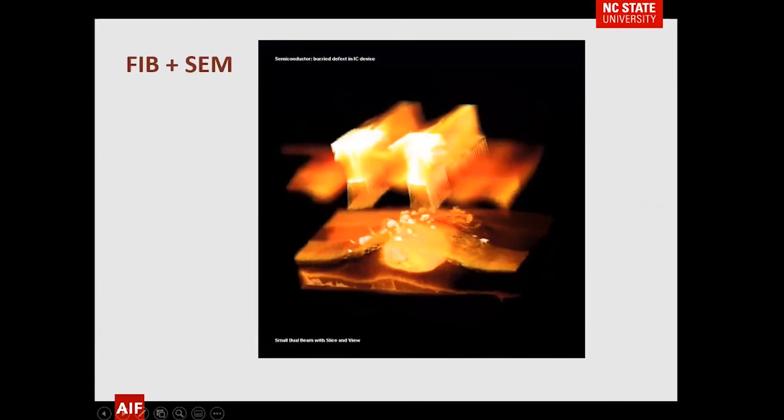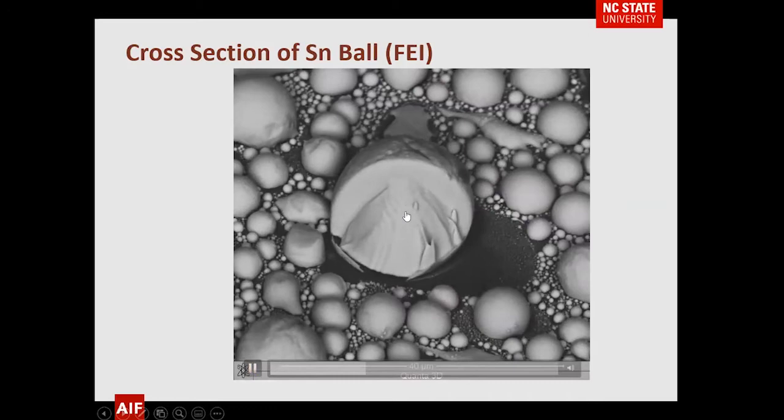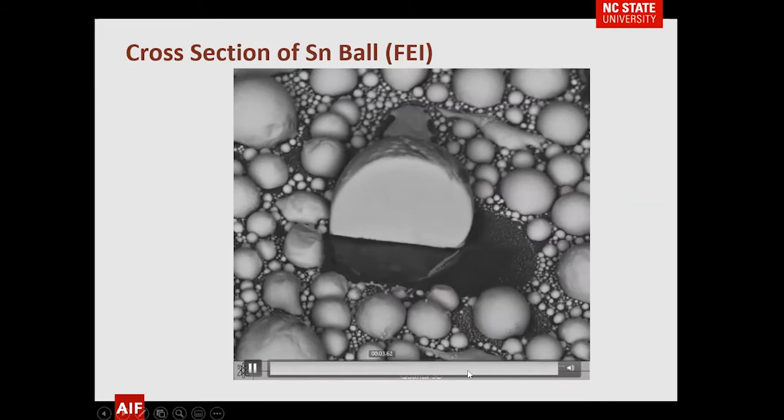Here's an example of a tin ball cross-sectioned with a FIB. You can see it's like melting it away as you take the cross-section. This is about 40 micrometers, so roughly 10 micrometers of removal — well within the ability of the FIB — and you're left with a very nice cross-section. Everything looks pretty uniform within that tin ball.